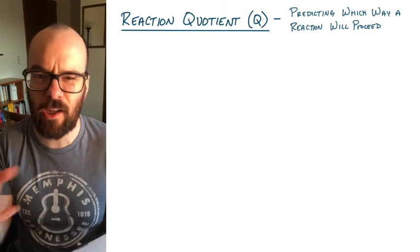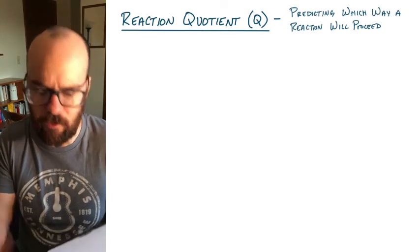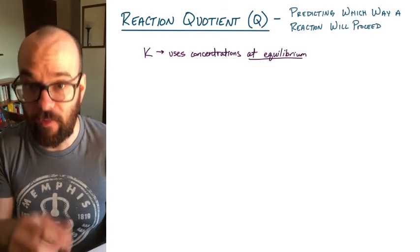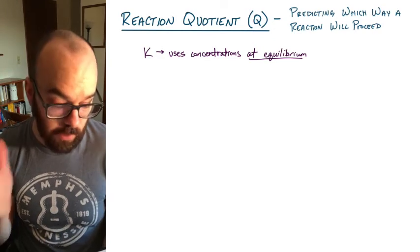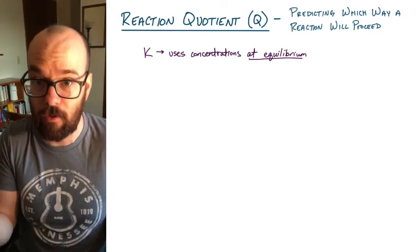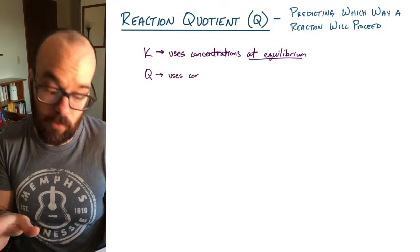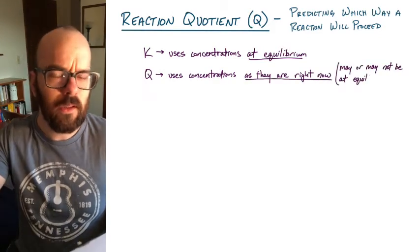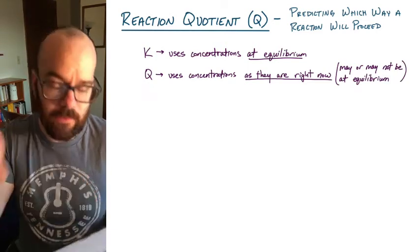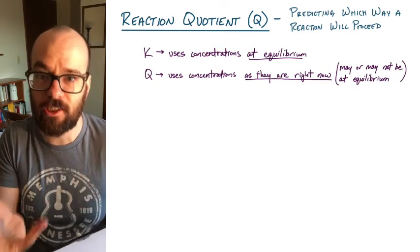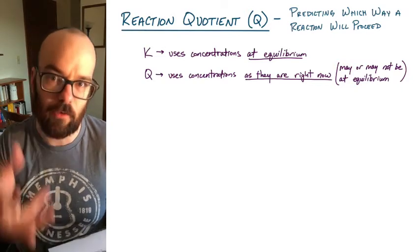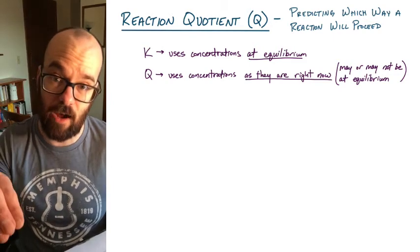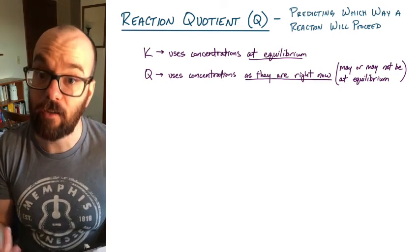Let's start by comparing Q and K — what are they and what's the difference? A K value uses concentrations at equilibrium; that's the key difference. K is looking at the concentrations at equilibrium, whereas Q uses the concentrations as they are now, at some point before the reaction reaches equilibrium. Q tells us the current ratio of products over reactants; K tells us that ratio at equilibrium.